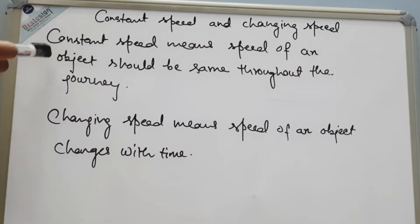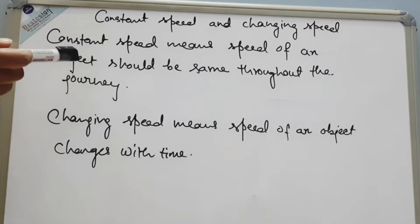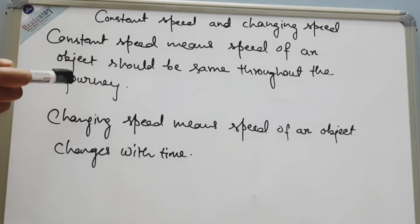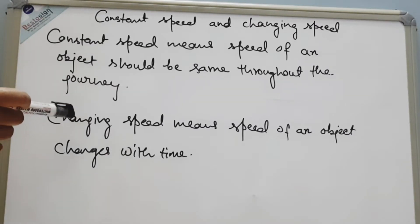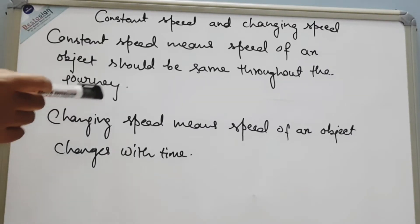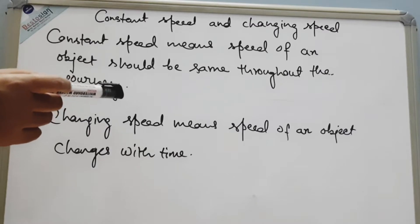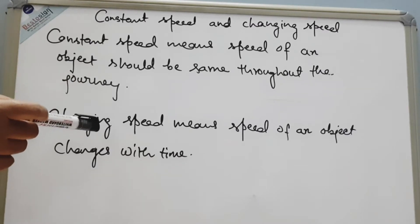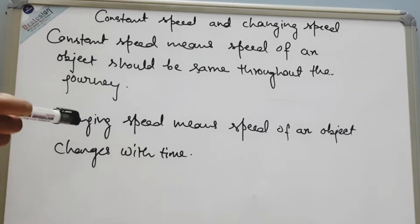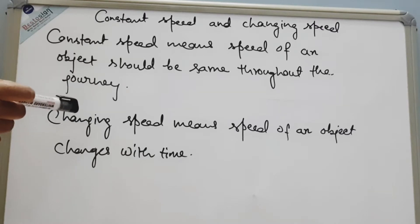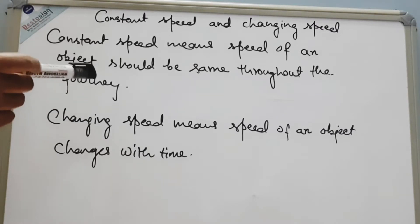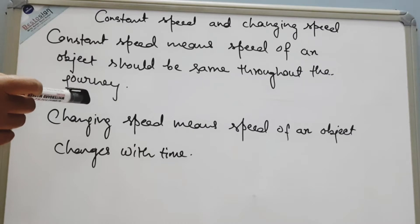Constant speed means speed of an object should be same throughout the journey. And changing speed means speed of an object changes with time. Changing speed is also known as variable speed.